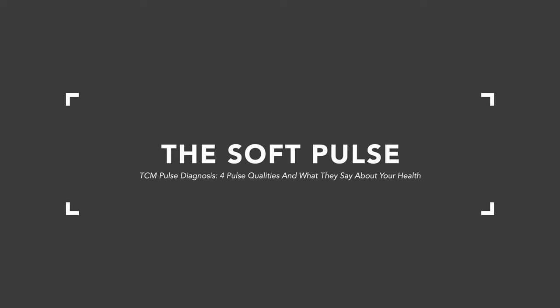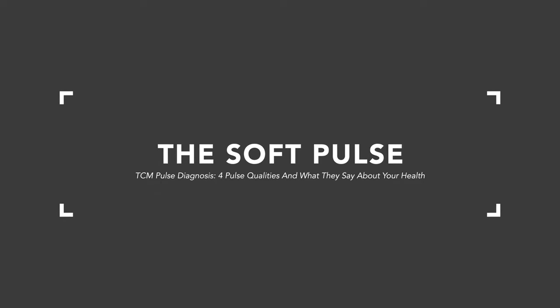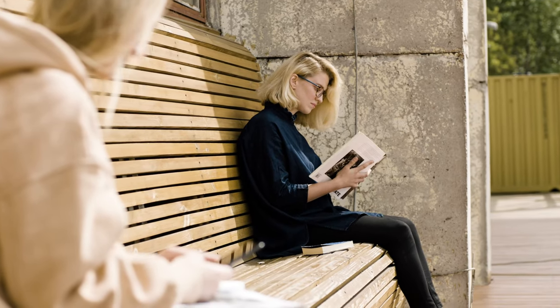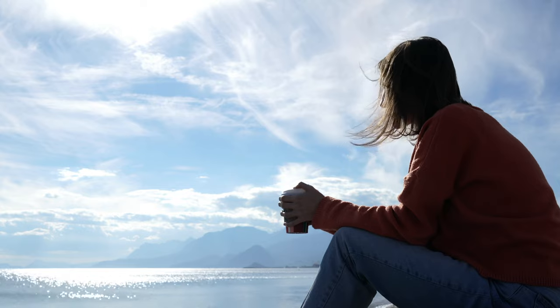A fourth pulse quality is called the soft or moderate pulse. These are associated with the earth organs in traditional Chinese medicine, meaning the digestive system. A moderate pulse can be a normal pulse — it doesn't have to be pathological — but it can also indicate digestive issues: appetite problems, bloating, loose bowel movements. It could reflect someone who is sedentary and doesn't exercise, but very often these pulses indicate something going on specifically with digestion, particularly the spleen, stomach, and pancreas.